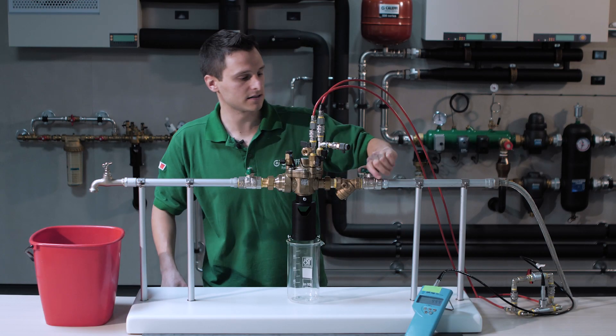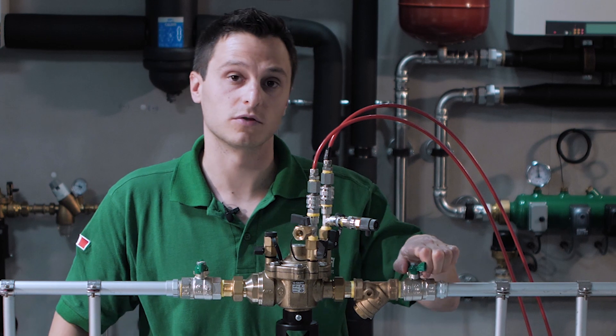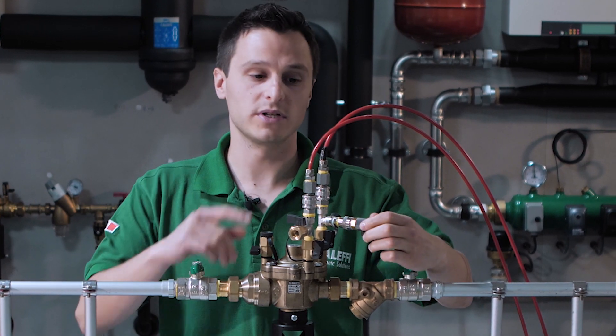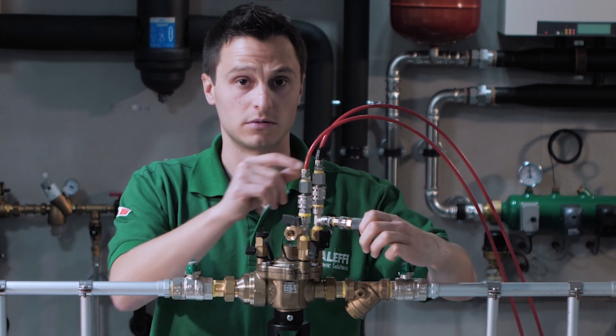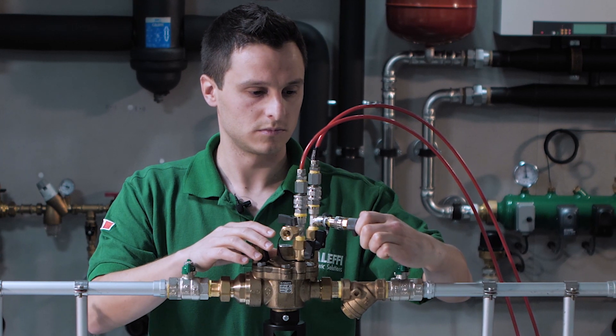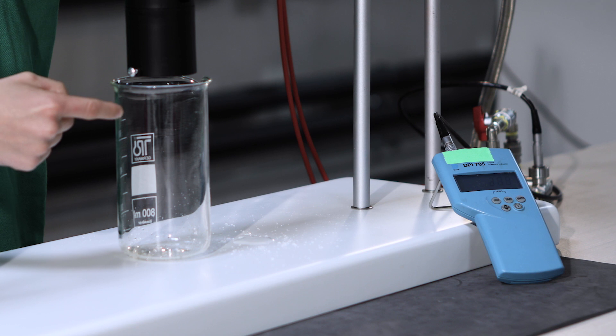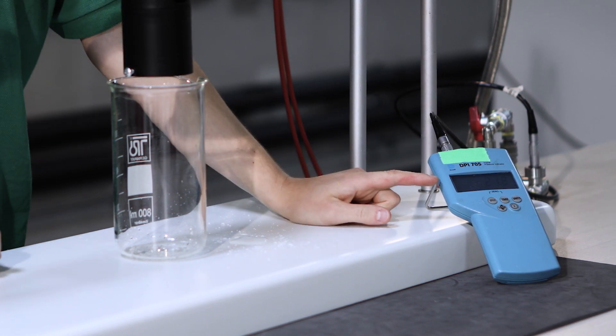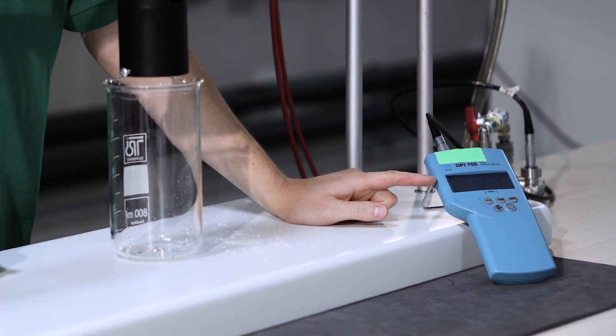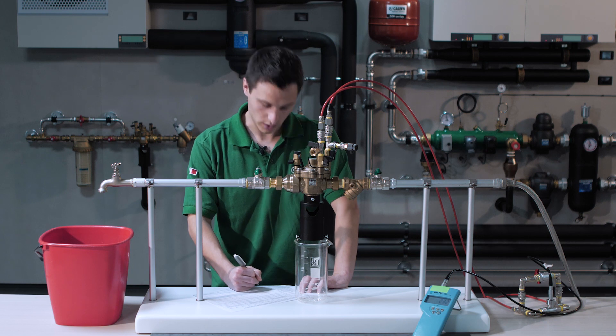For the second test, close the upstream shutoff valve and decrease the pressure in the upstream chamber. When the device starts dripping from the discharge line, read the value on the display and take note of it.